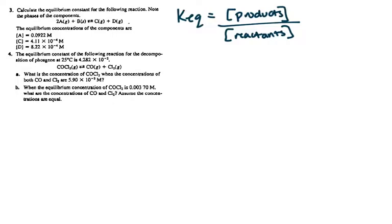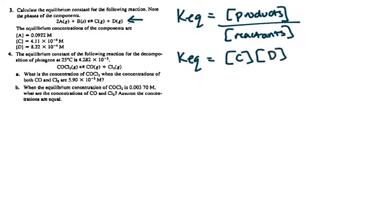We're going to first start with number 3, which is more of a general one — it's just got A, B, C, D instead of actual molecules. We'll move on to 4 next, which gives you the actual molecules. So if I was going to set up a general equilibrium expression for this reaction, K_eq — the equilibrium constant — would equal the concentration of the products. So in this case, that's the concentration of C times the concentration of D over the concentration of the reactants.